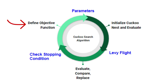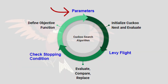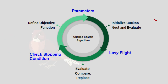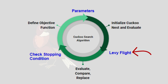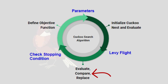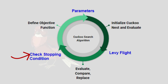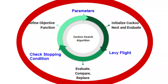First you will define the objective function — you can define any objective function you're working on. Then initialize the important parameters, initialize the population, and evaluate the population using the objective function. After that we will apply Lévy flight to calculate the new position, compare the new solution with the older one, rank them and replace. Then check the stopping criteria — if it is met then stop and display the best solution, else repeat the loop.